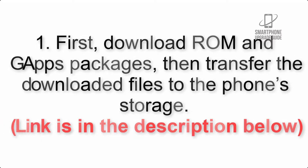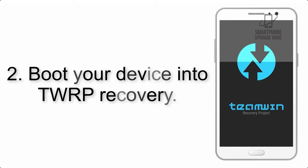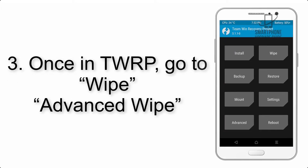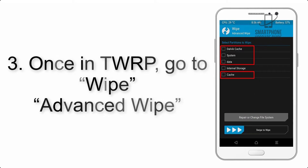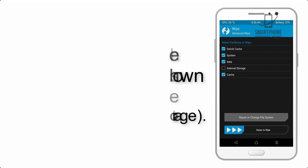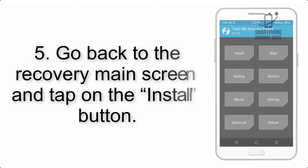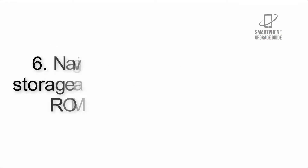The link is in the description below. Step 3: boot your device into TWRP recovery. Once in TWRP, click on Wipe, then Advanced Wipe, and select the checkboxes as shown in the image, excluding internal storage. Step 4: swipe the button to wipe the device.